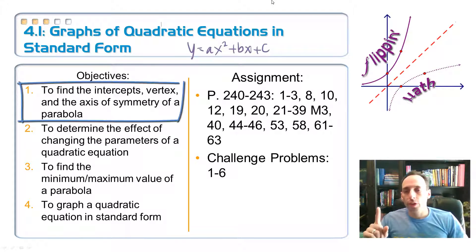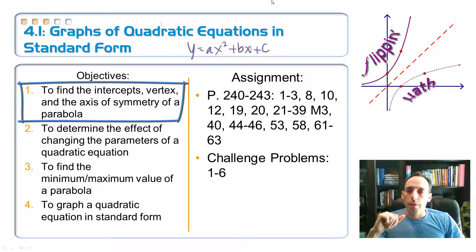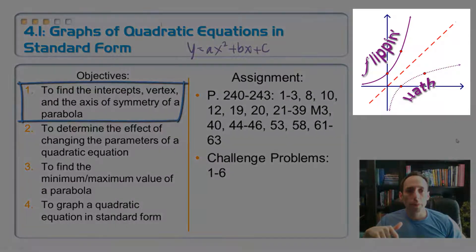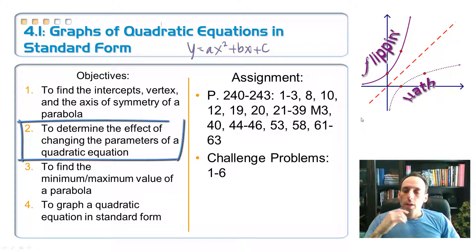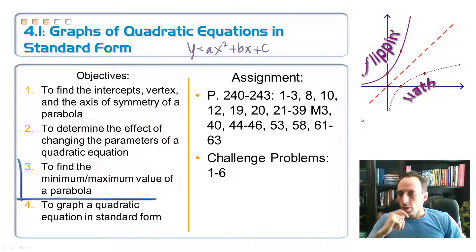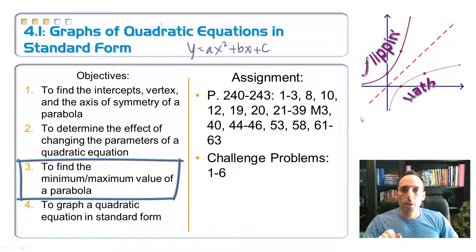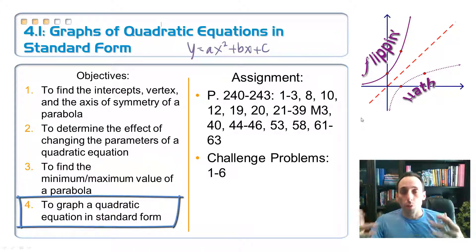Number one, we're going to find the intercepts of the graph - the x-intercepts and the y-intercept - find the vertex point and the axis of symmetry. Second, we're going to determine what happens when you change the parameters on that equation. By parameters I mean a, b, and c. If you change those things, what happens to the graph? Number three, we're going to find the minimum or the maximum value of a parabola - how high does it go, how low does it go. And finally, number four, putting all those things together to graph some parabolas when these equations are in standard form.